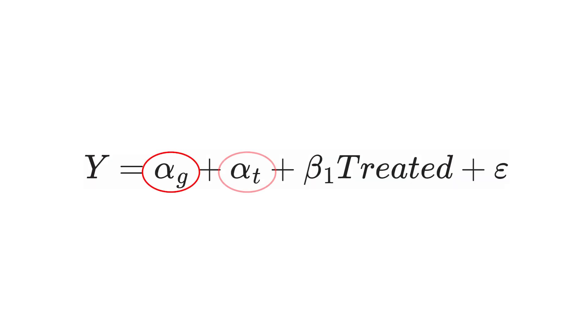I need a model that lets me say: here's the effect of treatment in this period, and this period, and this period. It turns out to be surprisingly easy. We start with our basic two-way fixed effects model — fixed effects for group, fixed effects for time, and a treatment indicator that is one if you are in a treated group in a post-treatment period and zero otherwise. To turn this into a dynamic treatment model, we take that treated indicator and interact it with a set of fixed effects for time periods — so we interact being in the treated group with being in the year 2008.